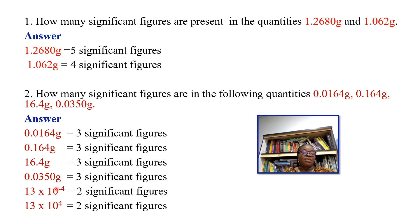For 13 × 10⁻⁴ and 13 × 10⁴, both have 2 significant figures. When you expand the power of 10 the resulting zeros have no decimal point before them, so they are not significant. The only significant values are 1 and 3.